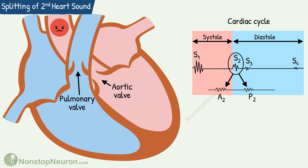The pressure in the aorta is higher than that in the pulmonary artery. So normally, the aortic valve closes slightly earlier and then the pulmonary valve closes. Because of this, the sound of closure of the aortic valve is produced a bit early, and then the sound of the pulmonary valve is produced. Thus, there is a splitting of S2 into A2 and P2 components.